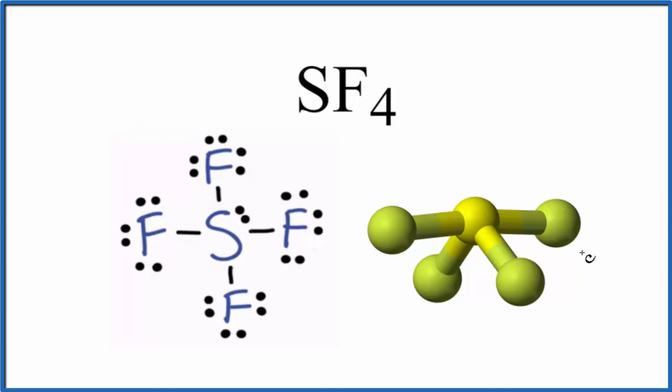And that's why we have this seesaw molecular geometry for SF4. So because we have single bonds, the electron pairs are shared between the sulfur and the fluorine atoms. SF4 is a covalent or molecular compound.